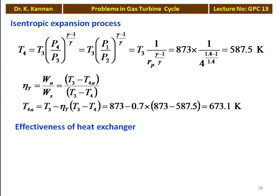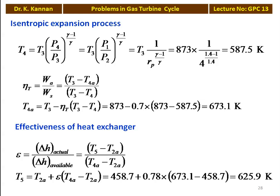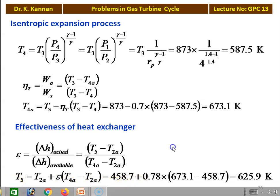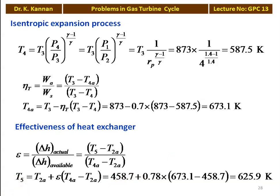With reference to the effectiveness of the heat exchanger, we define effectiveness equal to actual enthalpy drop divided by the available enthalpy drop across the heat exchanger. In terms of temperature, the actual temperature rise of air (T5 minus T2a) divided by the maximum temperature difference available in the heat exchanger (T4a minus T2a). Calculating T5: T5 equal to T2a plus epsilon into (T4a minus T2a). Substituting all numerical values: 458.7 plus 0.78 into (673.1 minus 458.7) equal to 625.9 Kelvin.